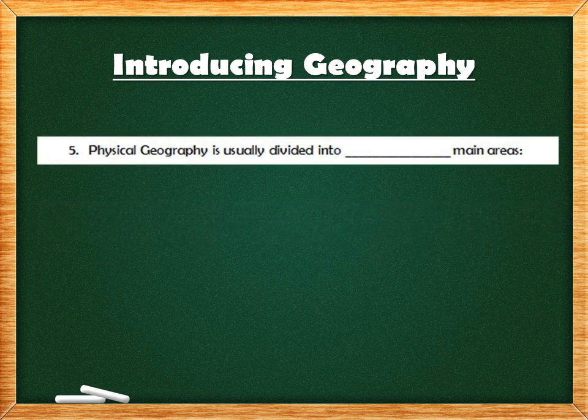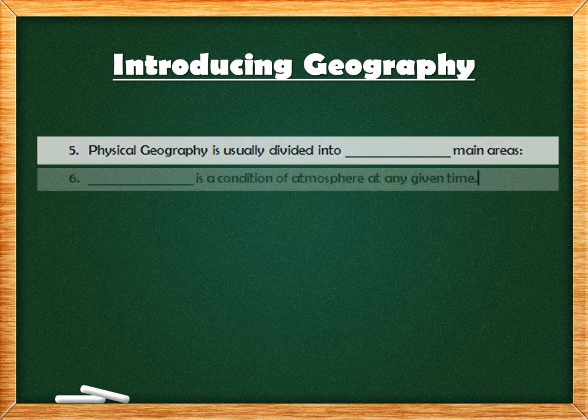The fifth question is: Physical geography is usually divided into blank main areas. The answer is 3. You can write T-H-R-E-E or write 3 in numbers.